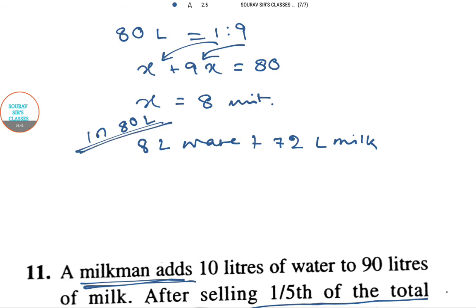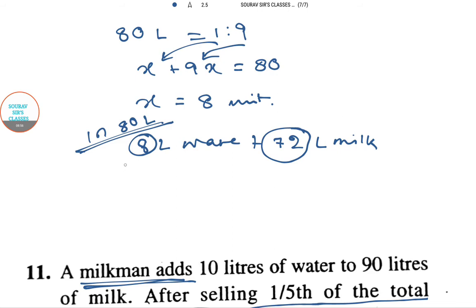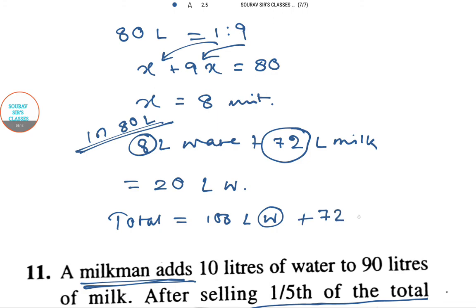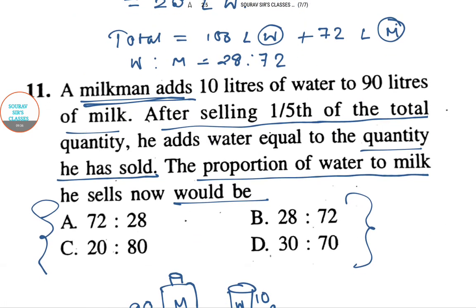In the remaining 80 liters we have 8 liters of water and 72 liters of milk. He then adds 20 liters of water to bring the total back to 100 liters. So the total water is now 28 liters and milk is 72 liters, giving a ratio of 28 to 72. Option B is the answer. Thank you for watching this video.